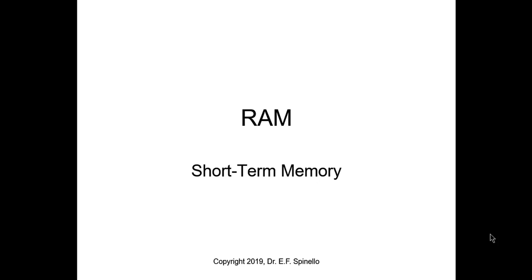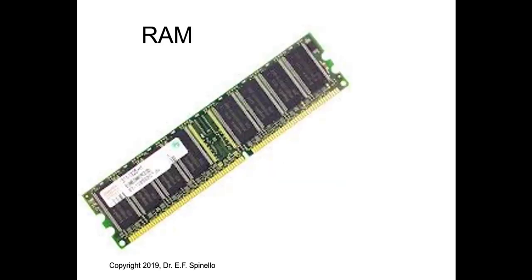RAM in a computer is just silicon chips on a little strip of circuit board, with an edge connector that plugs into a slot in the motherboard. RAM chips don't hold a lot of data — they don't have a huge capacity, but they don't really need to, just like you don't need a desk that can store every piece of information you own. The more RAM a computer has, the more efficient it can be, because there's more stuff it can work on at the same time.